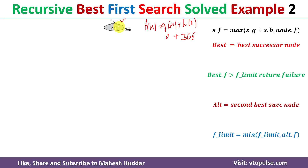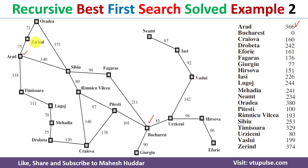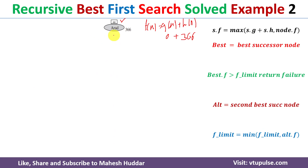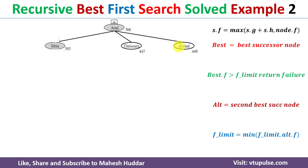Arad is not the goal node, so we find its successors. There are three successors: Zerind, Timisoara, and Sibiu. We add them to the search tree. For each successor, we calculate the f value using the equation: successor.f = max(successor.g + successor.h, node.f). Here, node.f is the parent's f value, which is f(Arad) = 366, so 366 appears in all comparisons.